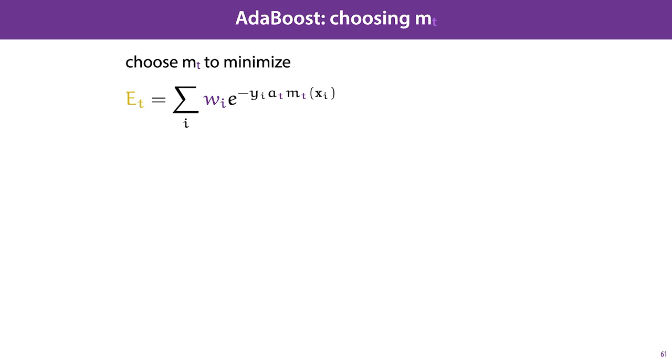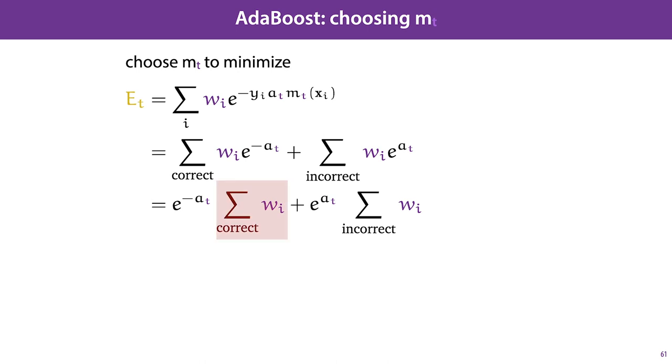We can separate this by the correctly classified and the incorrectly classified instances, where we note for the correctly classified instances that yi times MT of xi becomes 1, which cancels out against our negative exponential, and the loss is the weight times e to the power of AT.